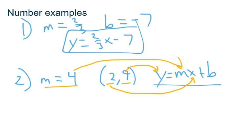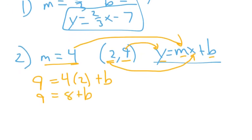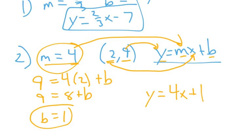You use that information. We have 1, 2, 3, 4 variables. And we're given 1, 2, 3 numbers. We're going to swap out 3 of those variables with numbers. 9 equals 4 times 2 plus b. We solve for b. So 9 equals 8 plus b. And then b equals 1. We now have b and m, and we can bring it all together. y equals 4x plus 1.